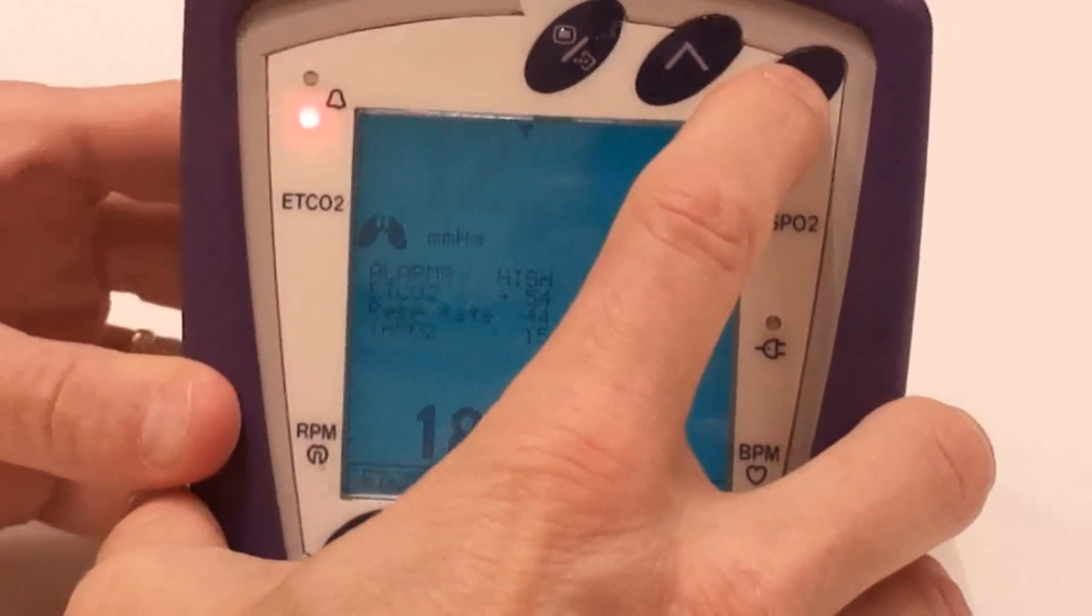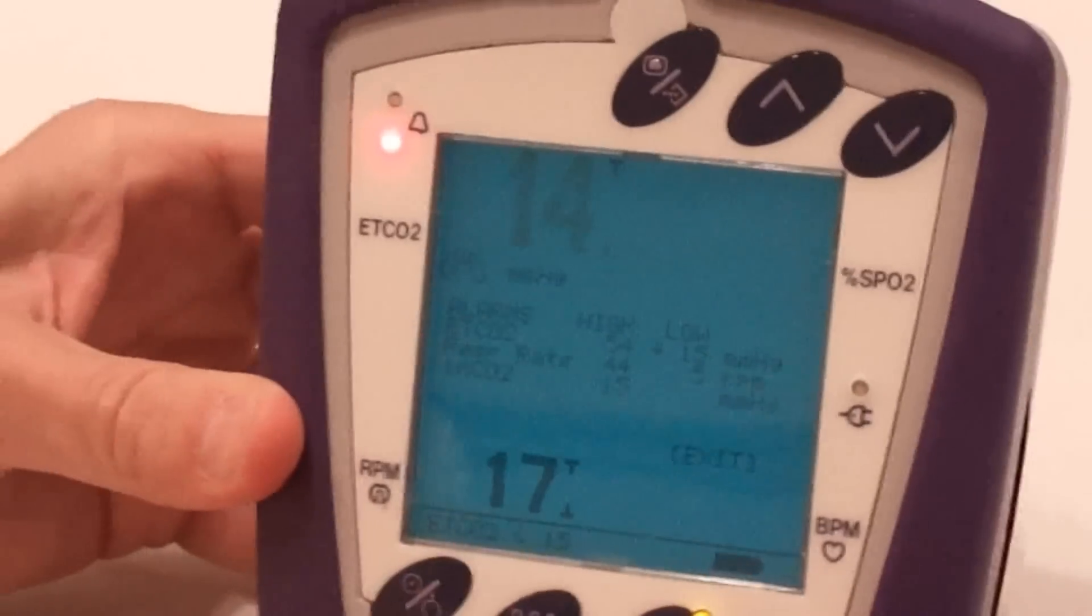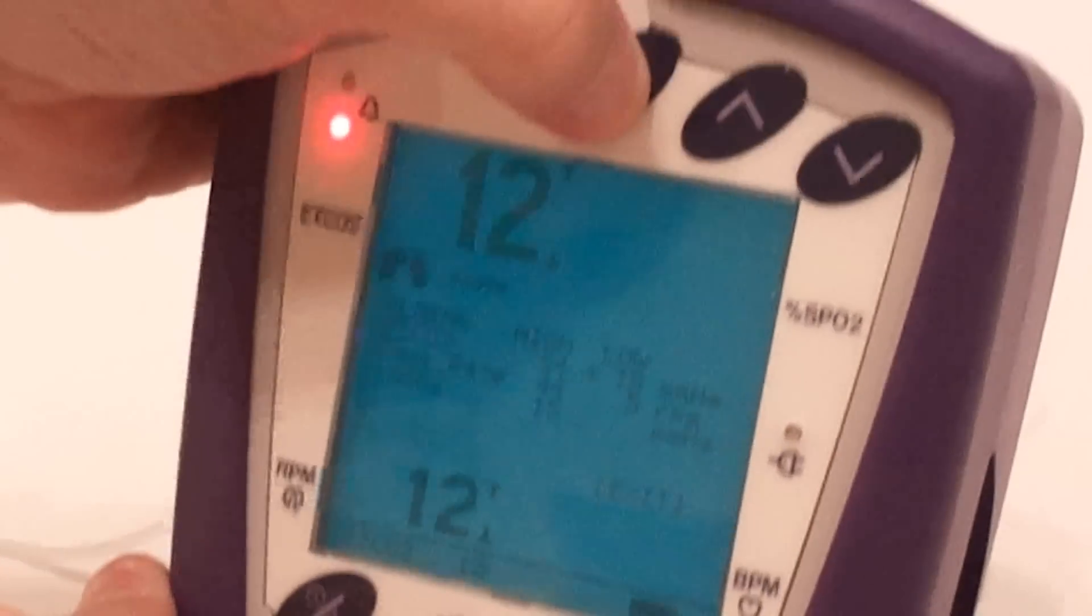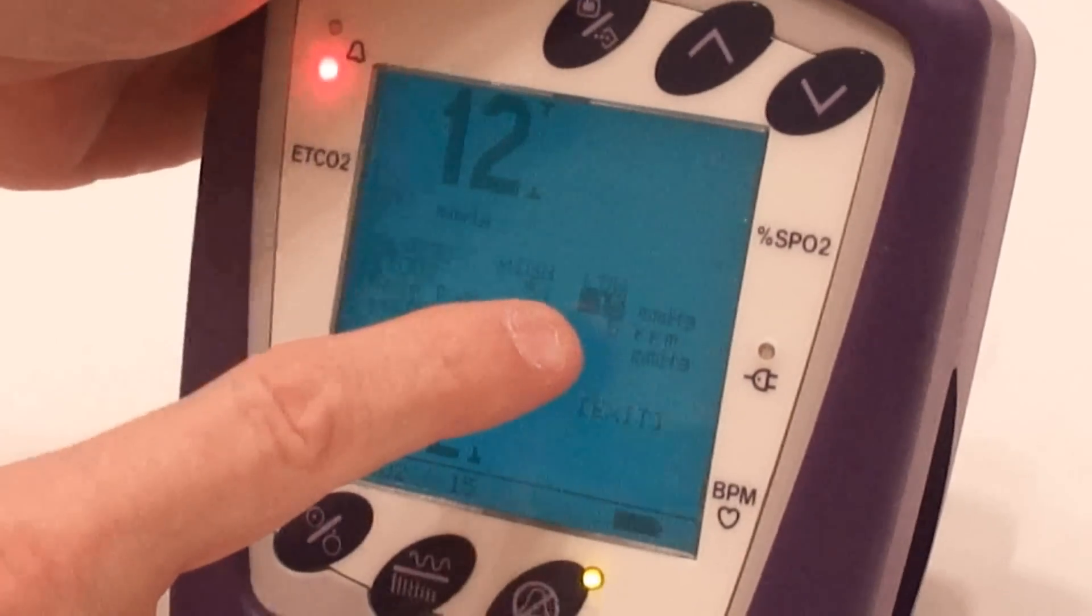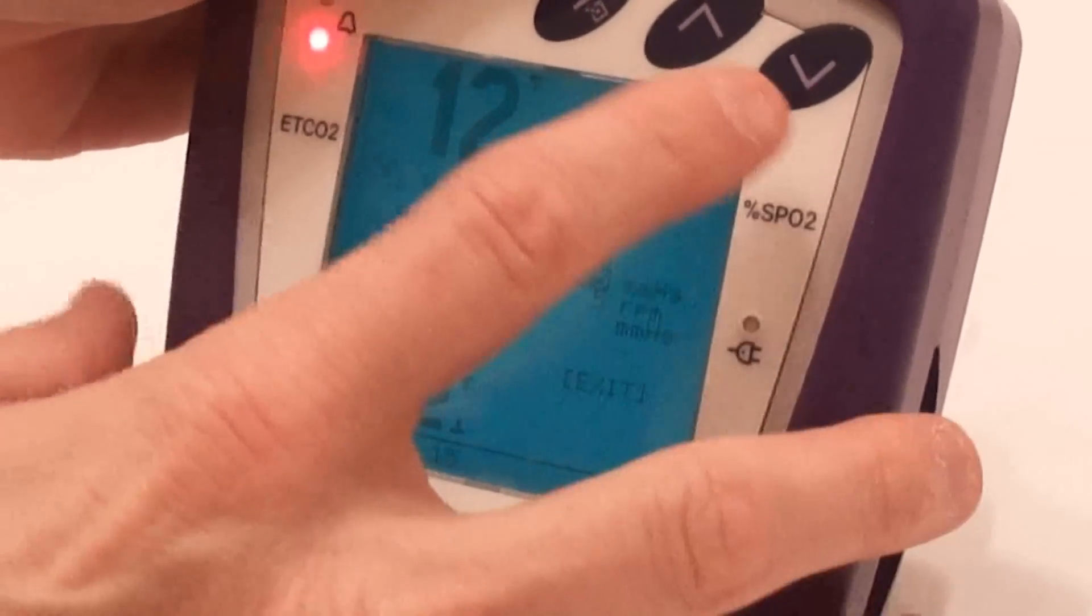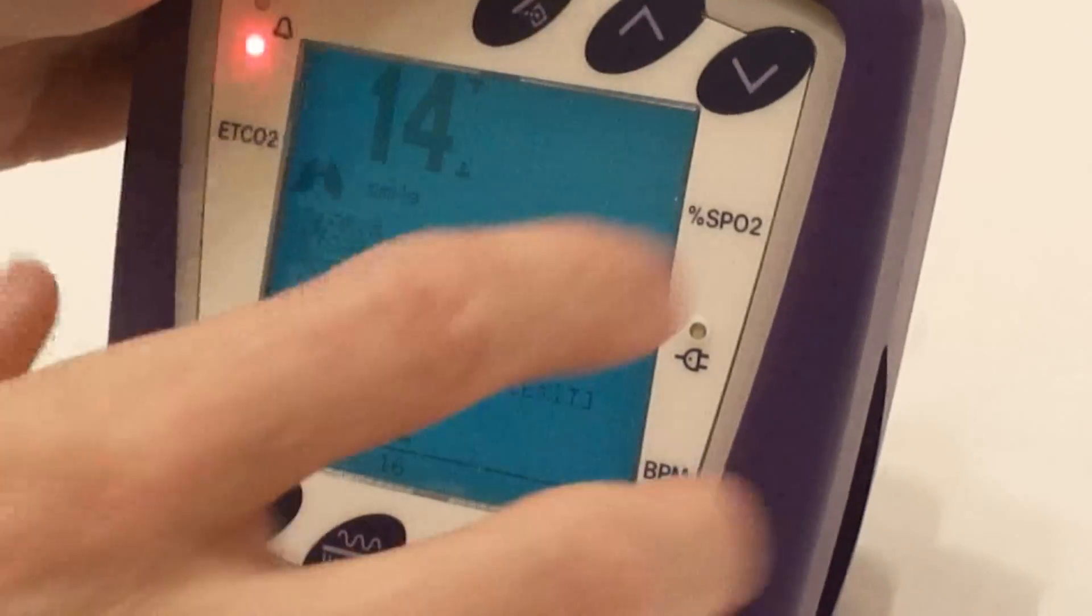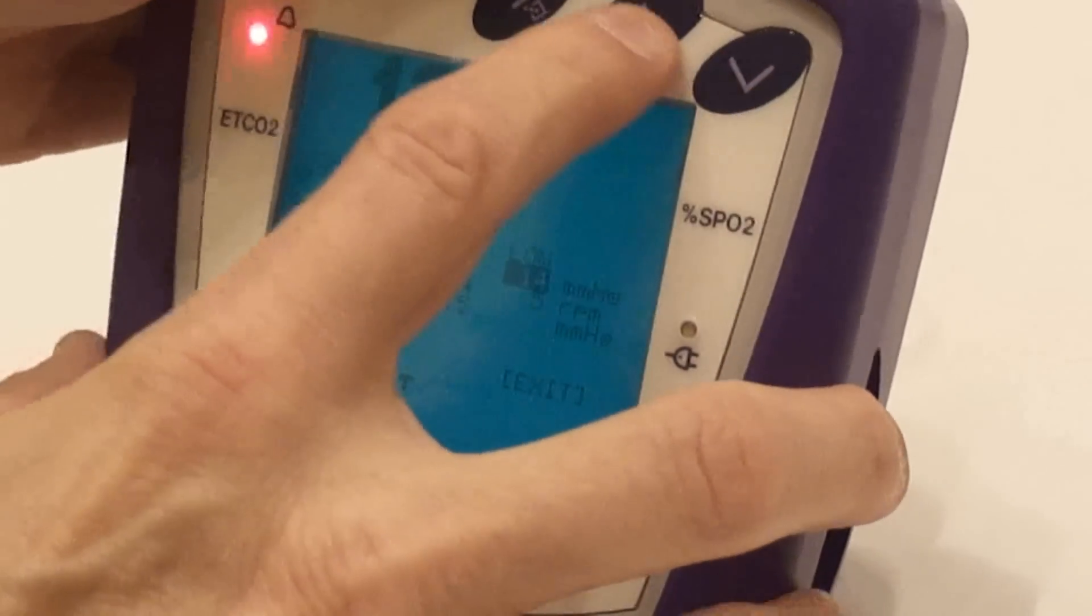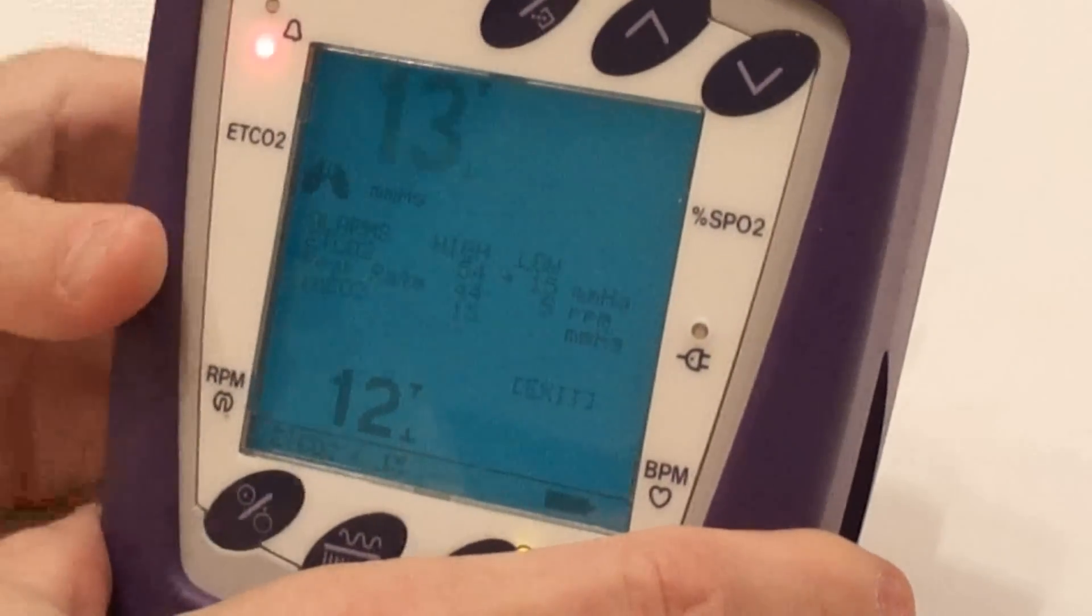Then we press the down button over here and that sends it over to the low setting for end-tidal CO2. Then what we can do is just press the menu button again. That highlights the low parameter there of 15. We can take that to 16 by pressing the up arrow key or we can take it down to 14, 13, whatever it may be. So we'll move it back right there and then we'll press the button.